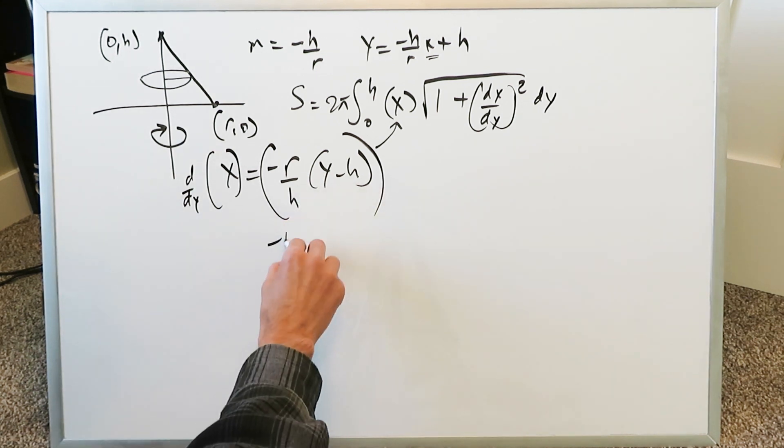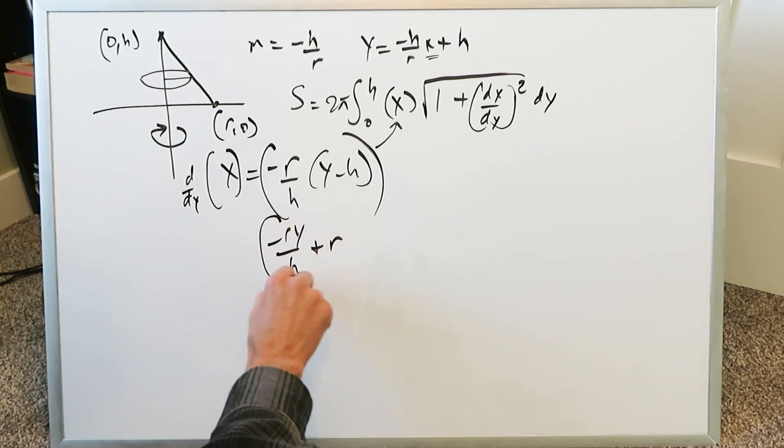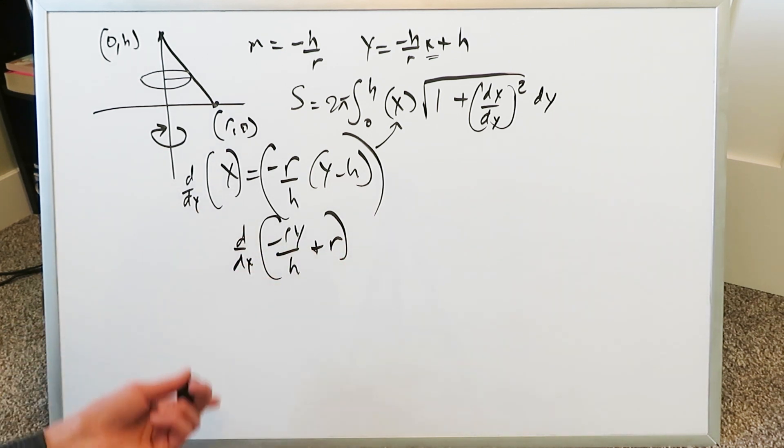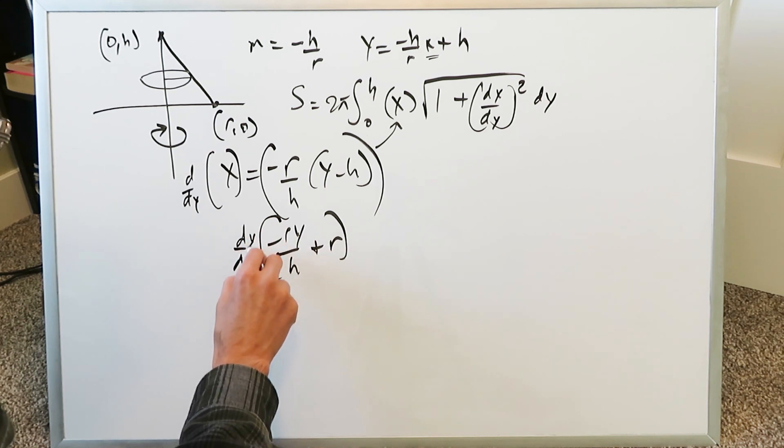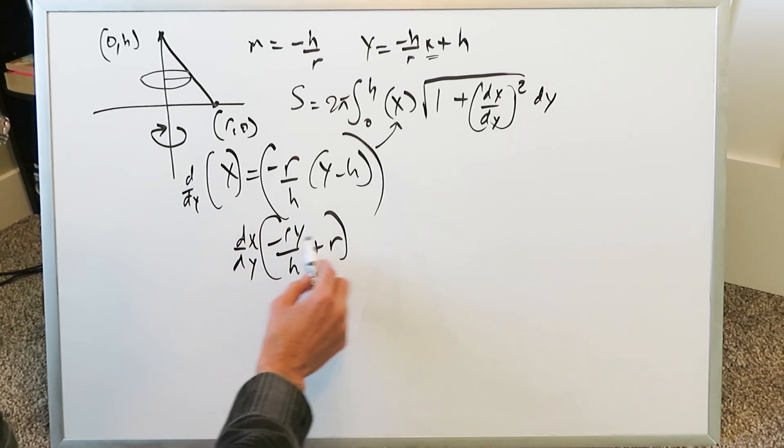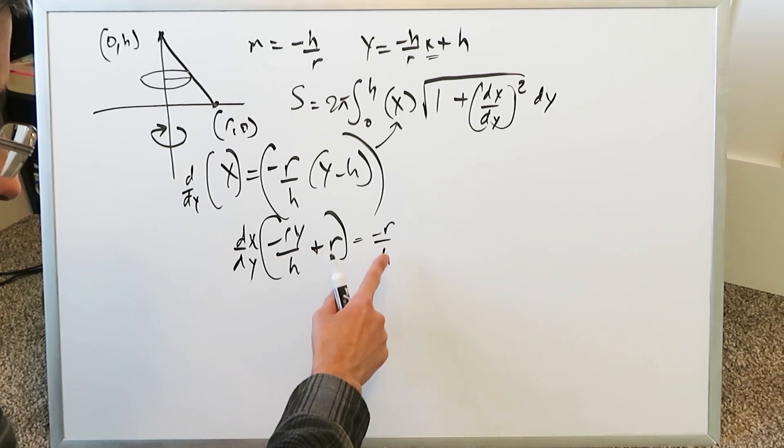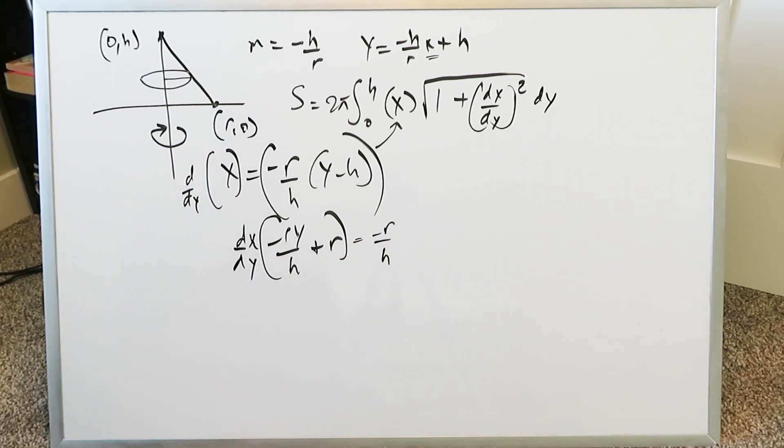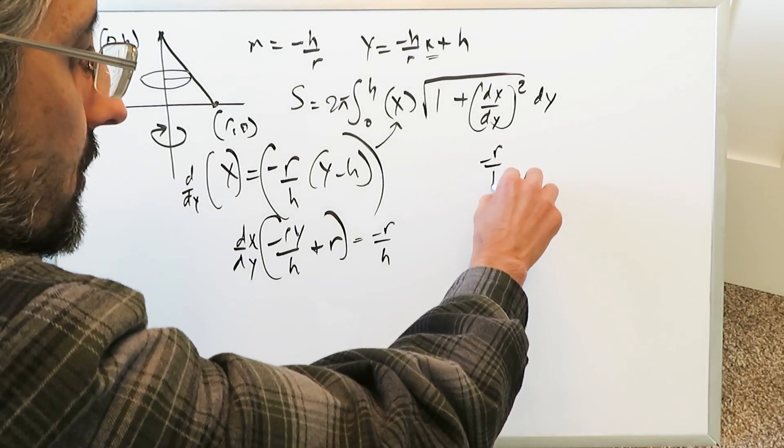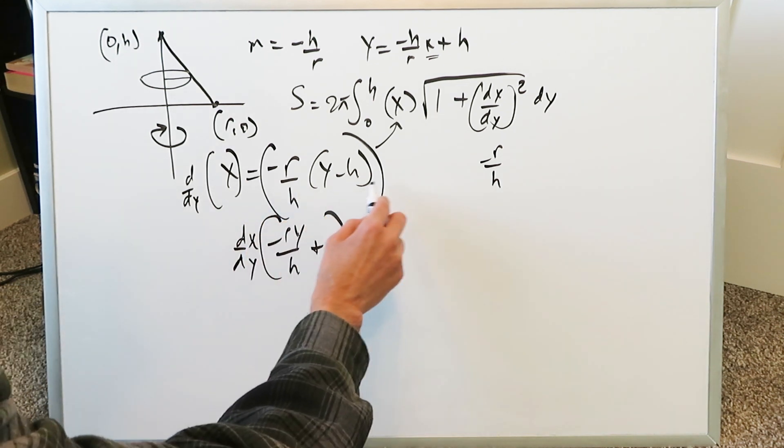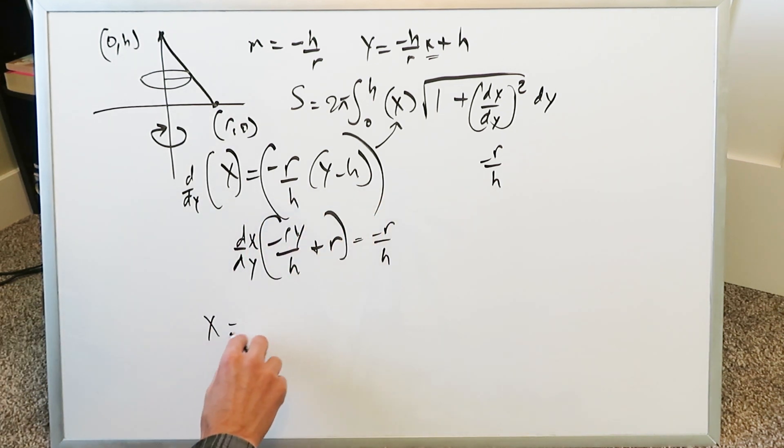If you were to open this up you have minus ry over h plus r and now you do the derivative of this. This is leading you to your dx over dy. With regards to y, your derivative here is minus r over h. With regards to a constant, it's 0, so minus r over h equals dx over dy. Here we'll put minus r over h and we now know what your equation is in terms of x. This equation in terms of x, I can write it in a better way by opening up the parentheses: minus ry over h plus r.